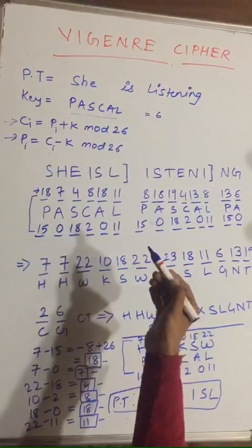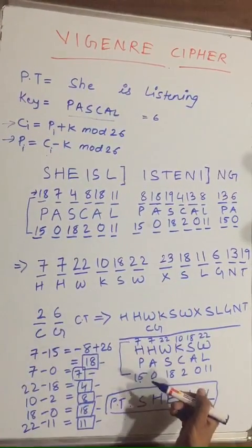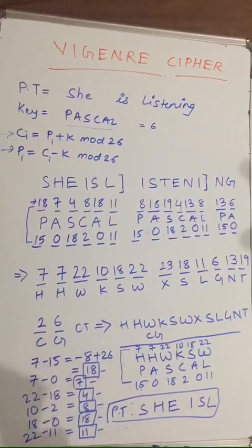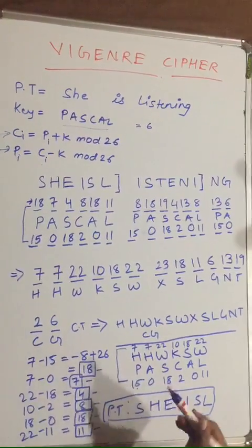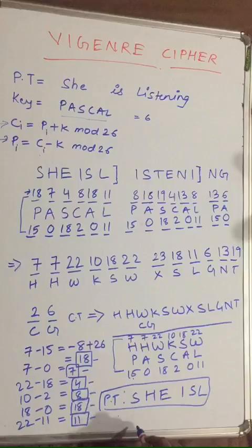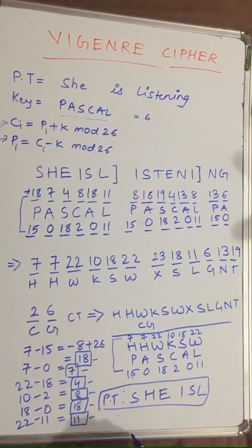As you can see, this plaintext S-H-E-I-S-L matches what we started with above. This is the encryption and decryption algorithm of the Vigenère cipher. Thank you.